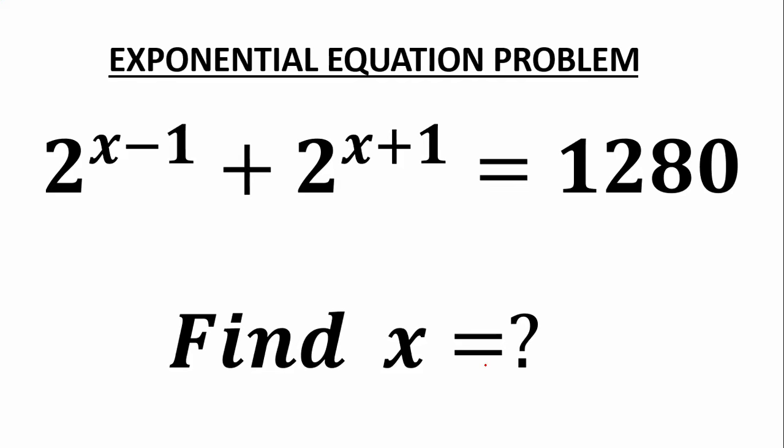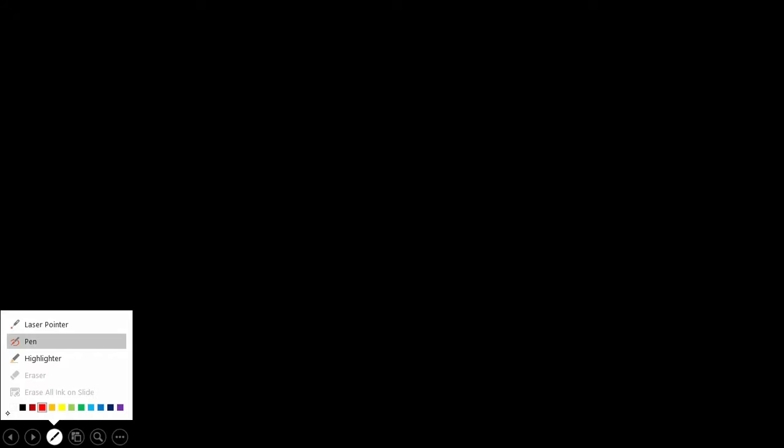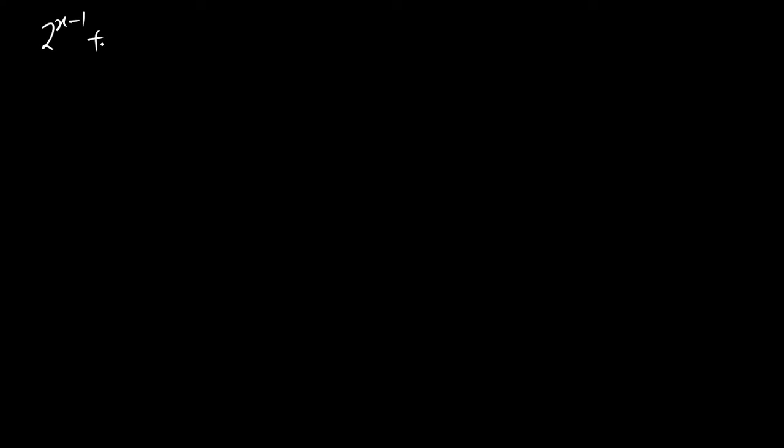This video is all about finding the value of x. We are given 2 to the power x minus 1 plus 2 to the power x plus 1 equal to 1280. Let's begin. You have 2 to the power x minus 1 plus 2 to the power x plus 1 equal to 1280.